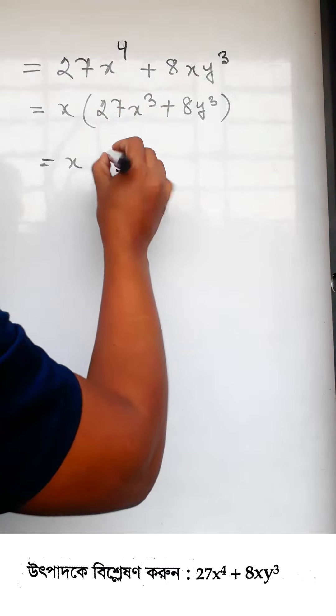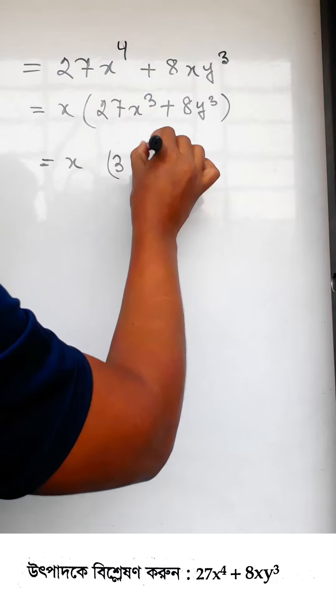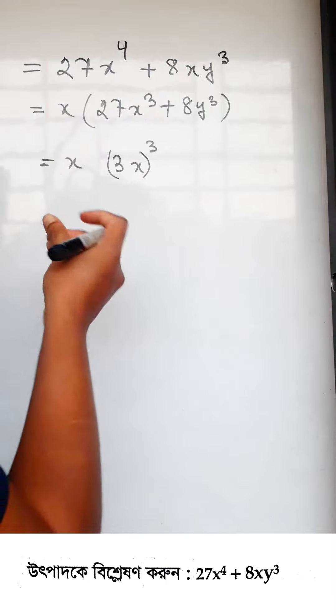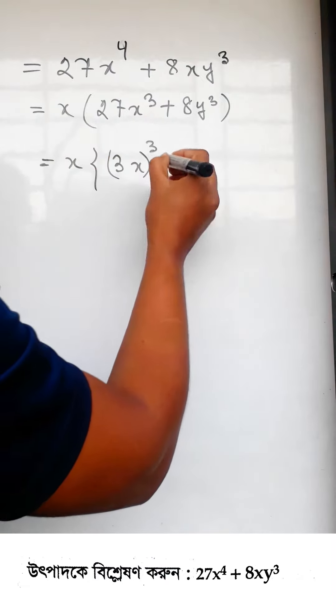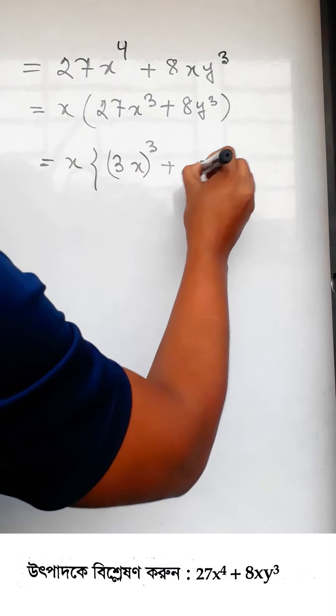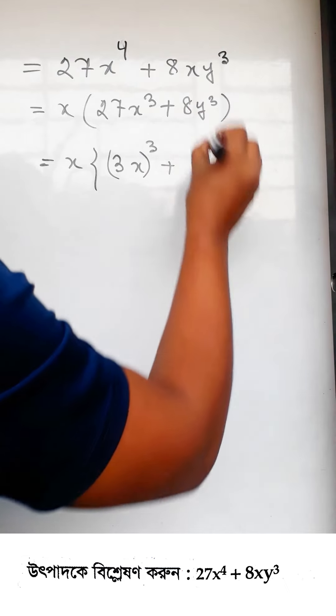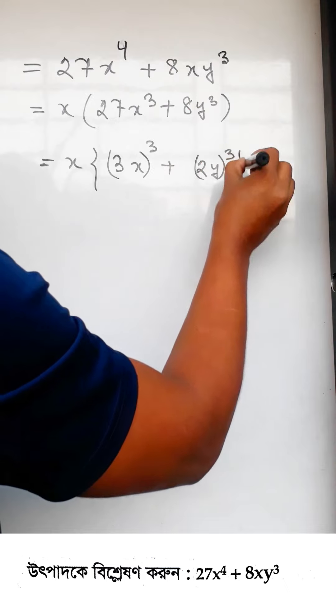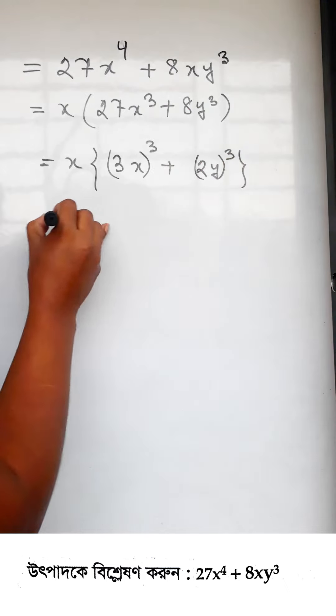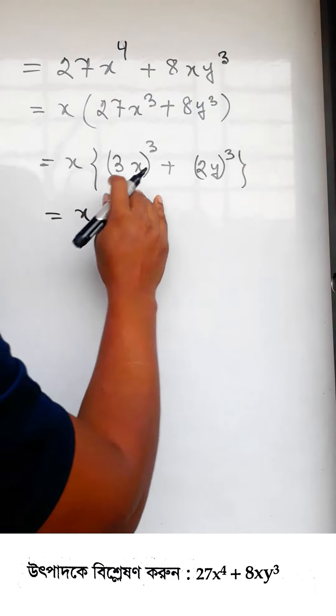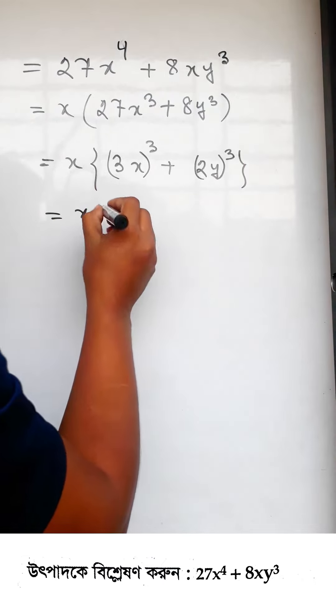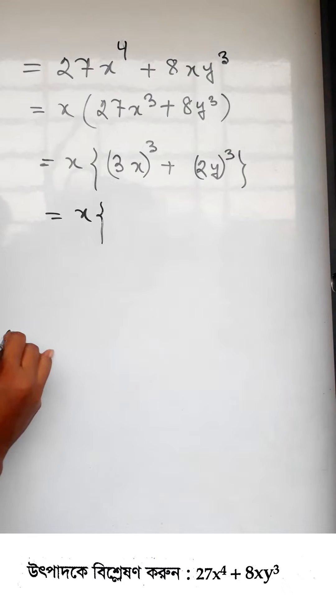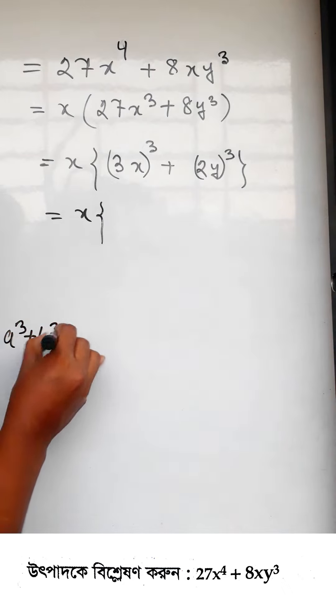Similarly, 8y^3 equals (2y)^3, since 2 cubed equals 8 and y cubed is y^3. So now we have x times ((3x)^3 + (2y)^3). This is the sum of two cubes: a^3 + b^3.